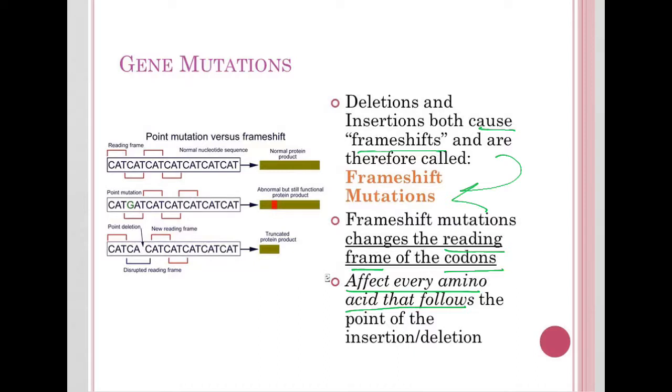If we look at the image on the left here, we can see we just have CAT repeated over and over as our codons, where the reading frame is C-A-T going on. Now a substitution mutation will not change the reading frame. We'll have C-A-T, G-A-T, C-A-T, C-A-T, and so on.